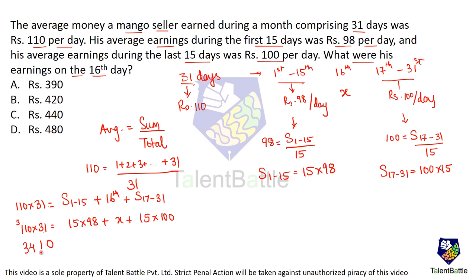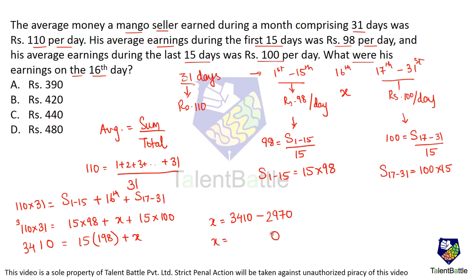31 × 110 = 3,410. And 15 × 198 = 2,970. So x = 3,410 − 2,970 = 440. The earnings on the 16th day is ₹440, which is option C.